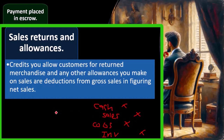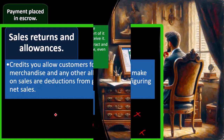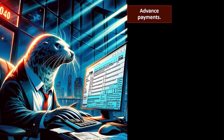Cash credits — you allow customers to return merchandise, and any other allowances you make on the sales are deductions from gross sales when figuring net sales. We're not talking about net income here; we're talking about net sales, which is net of things like returns and allowances. So income minus returns and allowances gives us net sales, and minus other expenses gives us net income.